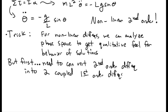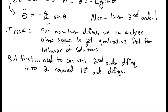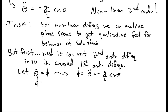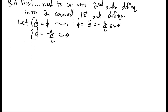The classic way to do this is to call theta-dot some new variable phi. Because of that, phi-dot is just theta-double-dot. So phi-dot equals minus G over L times sine of theta. The two equations we have are: theta-dot equals phi, and phi-dot equals minus G over L times sine of theta.